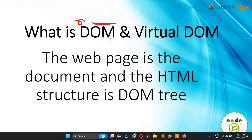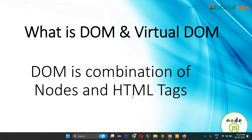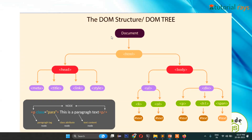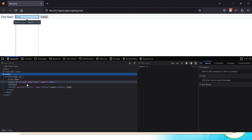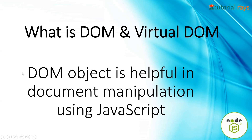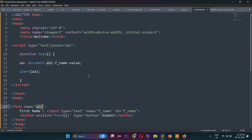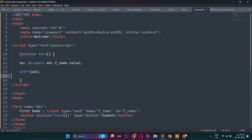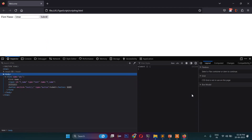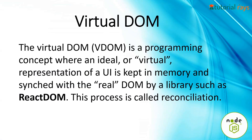The webpage is the HTML document and the HTML structure is the DOM tree. DOM is a combination of nodes and HTML tags — document, then html, then head, body, and so on. DOM objects are helpful in document manipulation using JavaScript because JavaScript itself cannot do anything without the DOM tree. Also, DOM is always a copy of the actual code — the actual code generates the DOM tree.